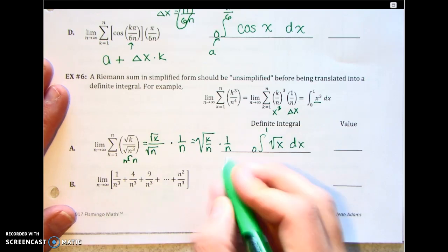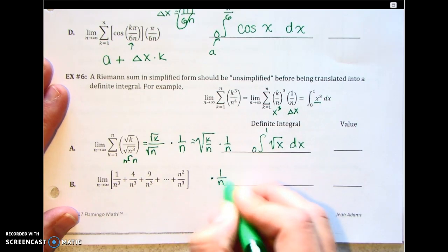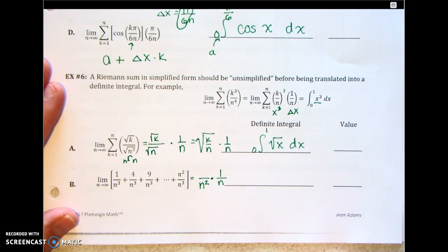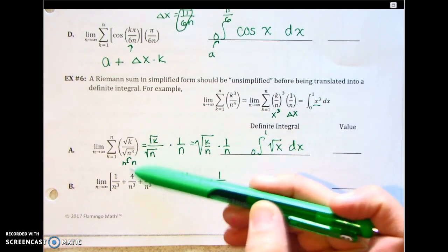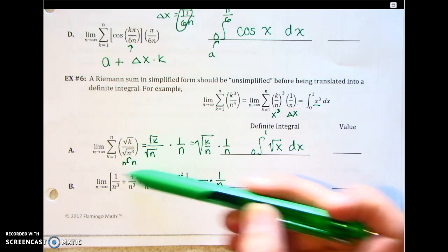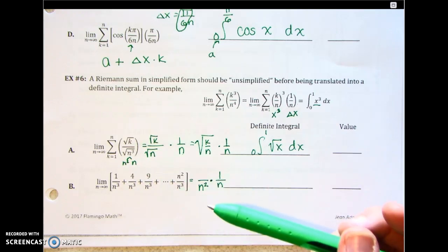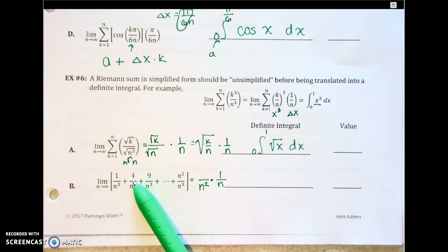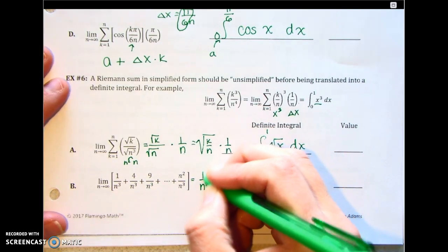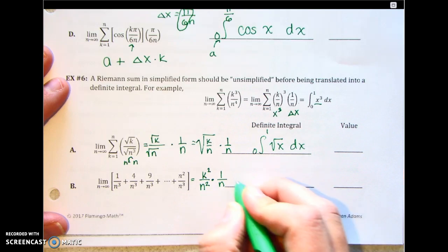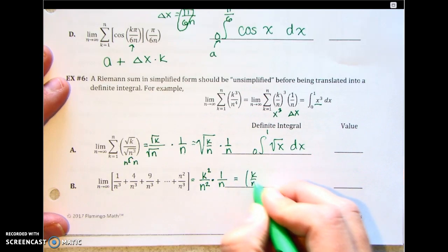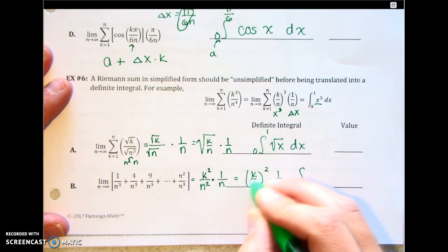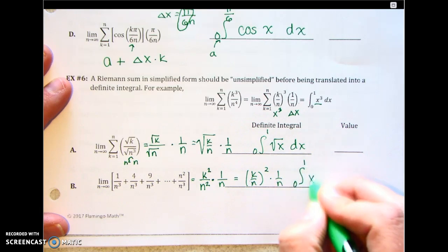We have n cubed, n cubed, n cubed — we need a 1 over n. If we take out 1 over n, what's left is n squared. In the numerator, the values 1, 4, 9 are all perfect squares representing the k's — this is k equals 1, k equals 2, k equals 3. So we're actually doing k squared. We can rewrite this as k over n squared times 1 over n, giving the integral from 0 to 1 of x squared.